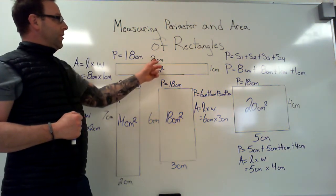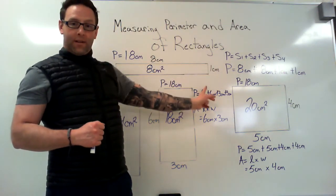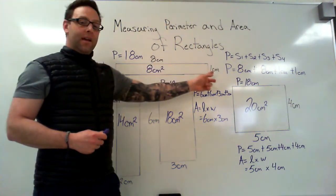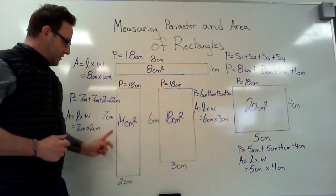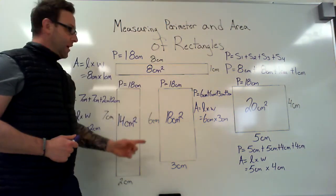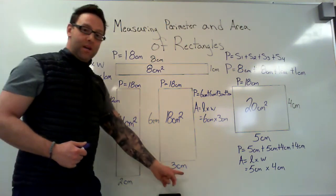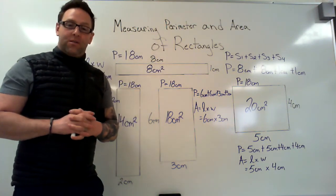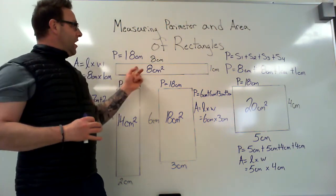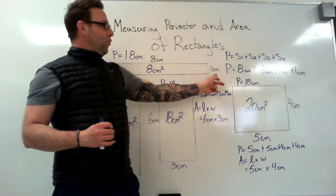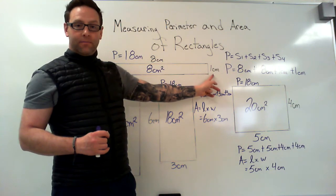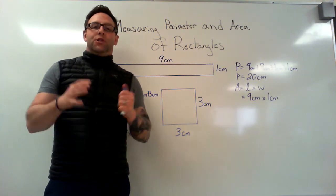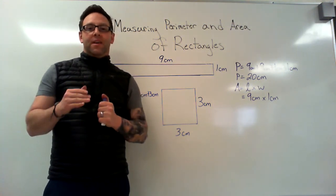If a question asks you to draw all rectangles with the same perimeter, you've got to find the smallest one — the one with the one-centimeter width or length. Then essentially what you do is drop one and add one: this one became seven and two instead of eight and one, then six and three, then five and four. So if you're asked to draw all rectangles with the same perimeter, first find the one with the one-centimeter side, then keep adjusting. The other type of question you could be asked is: draw all rectangles with the same area.